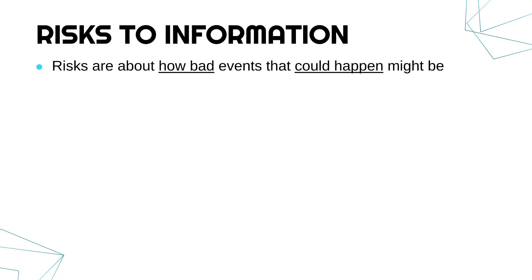Risks are all about how bad events that could happen might be. A risk is something which could happen — a risk hasn't necessarily happened yet. If a burglar broke into my house last night, that's no longer a risk because it's happened. Whereas right now, when I haven't had a burglar in my house, there is a risk — hopefully a small risk — that a burglar could break into my house. A risk hasn't happened yet, but could.